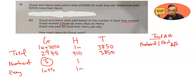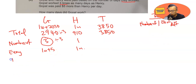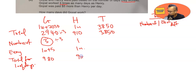The problem is that Gopal worked three times as many days, so you cannot use that directly to find the total difference — it's not fair. You need to convert three times as many days into the same unit as Henry, which is one time. So divide Gopal's total by 3: 2940 ÷ 3 = 980. Henry remains 910.